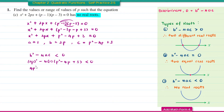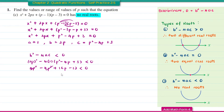Expanding: 4P squared minus 4P squared minus 16P plus 12... wait — 4P squared, then negative 4P squared, plus 16P, minus 12 less than 0. The 4P squared terms cancel, leaving 16P minus 12 less than 0.